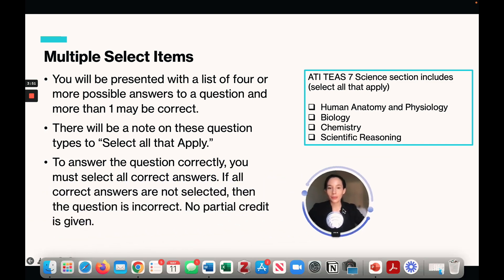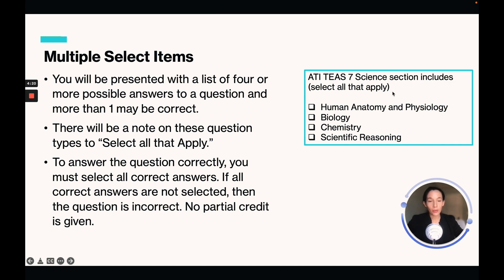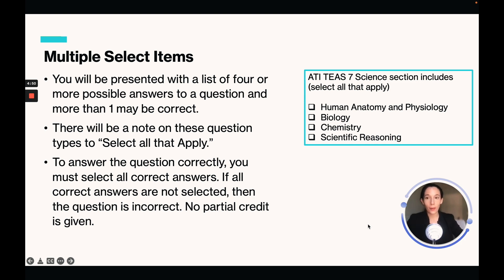Multiple select items will be presented with a list of four or more possible answers and more than one may be correct. There will be a note on these questions that says select all that apply, and to answer correctly you have to select all the answers — there's no partial credit. A great technique for select all that apply questions is to make it a true or false question: go through each answer and ask yourself if it's true or false, check it off if true and leave it blank if false.